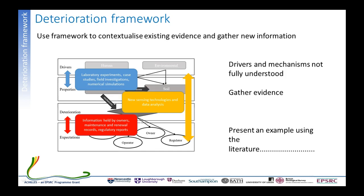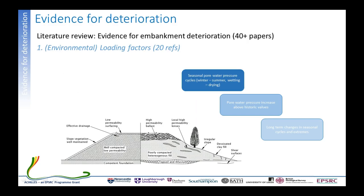Looking at evidence for embankment deterioration across 40-plus papers, three factors emerged. The first was loading factors, which were mainly environmental. The literature shows that seasonal pore pressure cycles — summer wetting and drying — can cause deterioration in earthworks. Pore pressure increases above historic values can exceed trigger thresholds and cause failures. There is also modeling evidence projecting how long-term changes in seasonal cycles and extremes might affect deterioration rates.